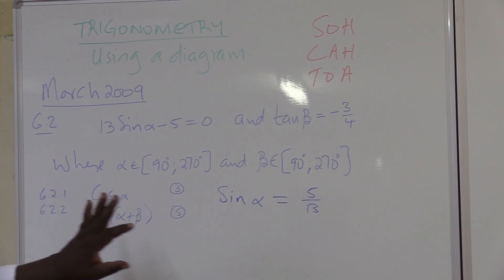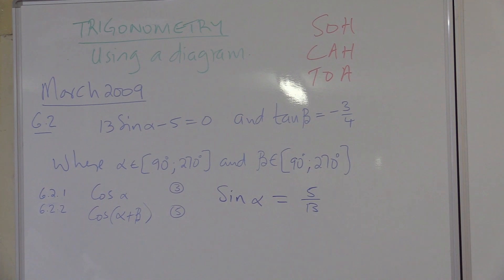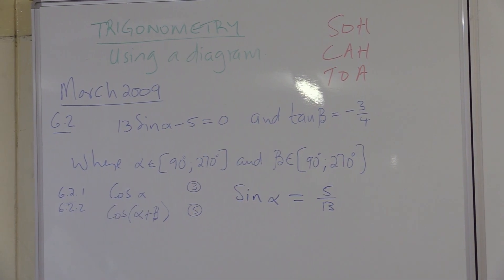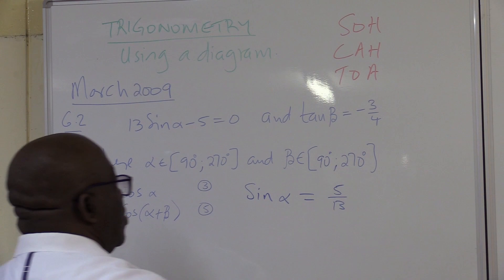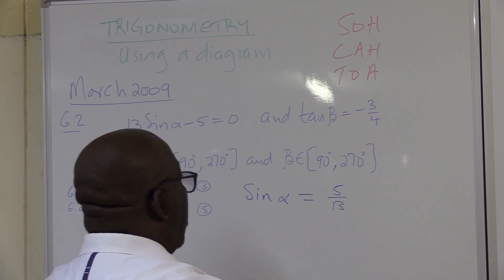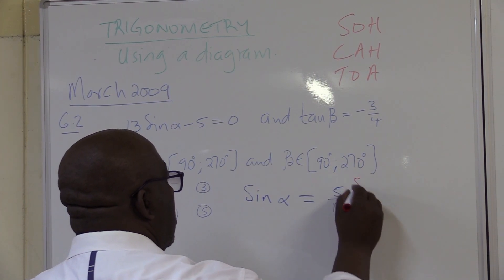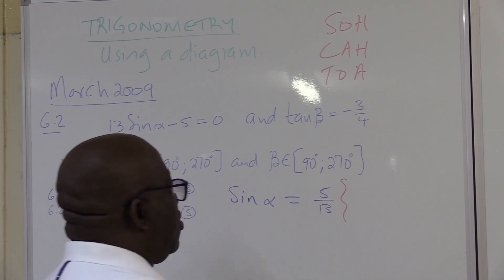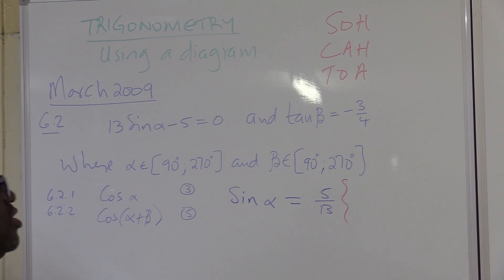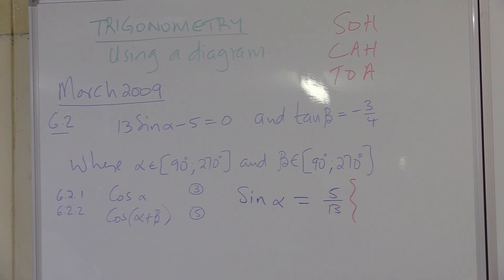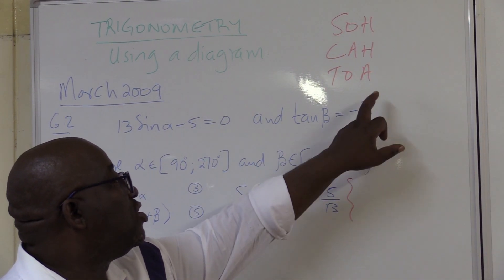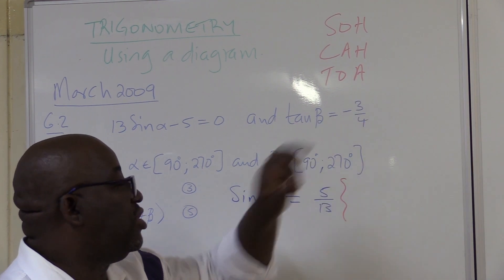Now we've got it in this form. Remember, this is also looking for alpha. Let's arrange this other one as well. It's already arranged — it's perfect. This one is tan beta. Tan is opposite over adjacent. So that's opposite, this is adjacent.